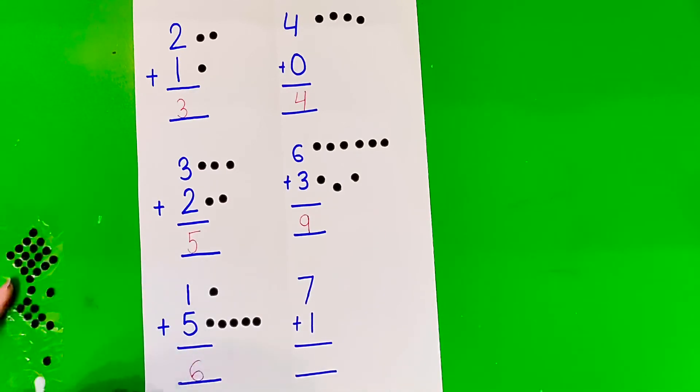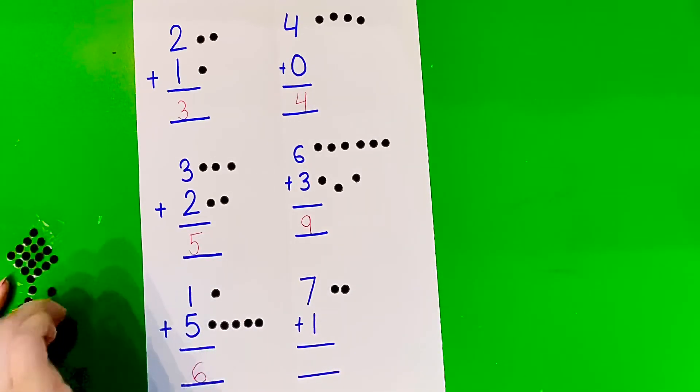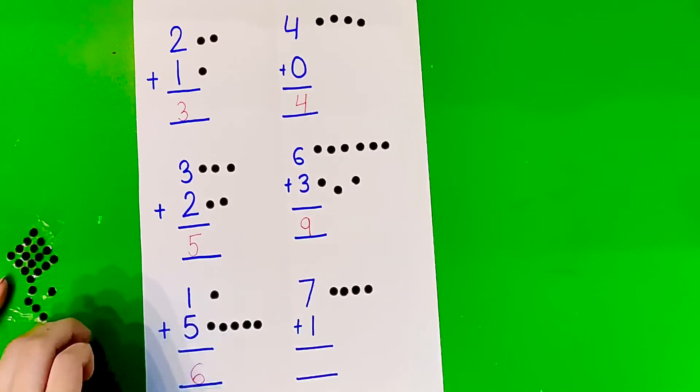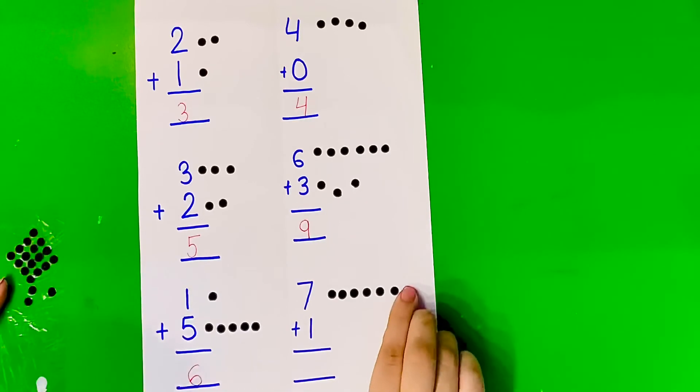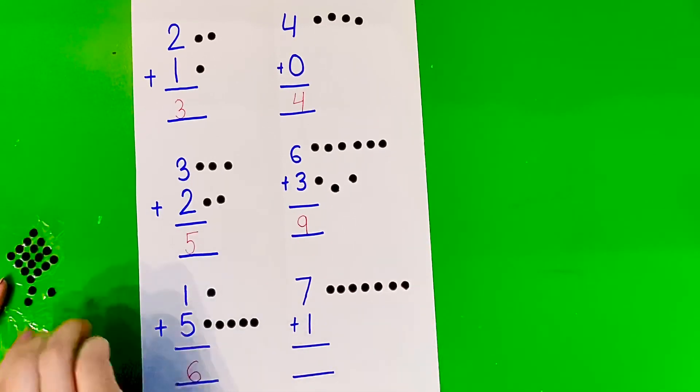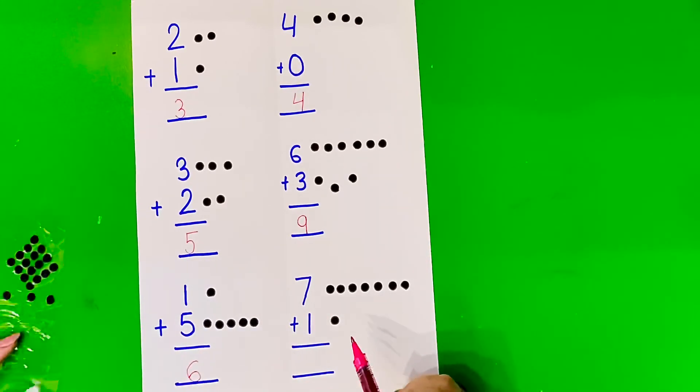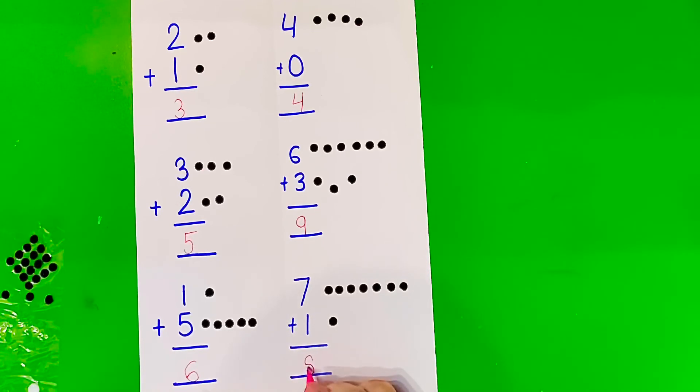And the last one is 7 plus 1. Let us paste 7 bindhies here. I have pasted 7 here, and we're going to paste 1 here. So let us count how many we get. 7 plus 1, let us do the addition. Let us count all the bindhies here: 1, 2, 3, 4, 5, 6, 7, 8. The answer is 8.